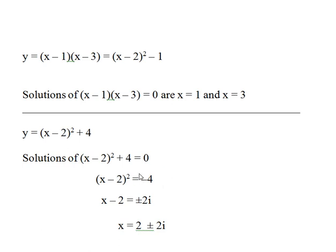So take 4 off both sides, find the square root, and we have plus or minus 2i. And so the solutions are, adding 2 to both sides, x equals 2 plus or minus 2i. Now, let's try and show this on the diagram.